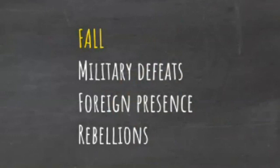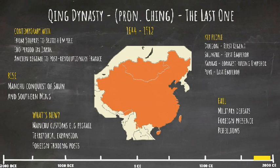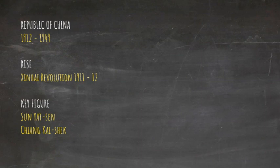The Republic of China lasted until 1949, its key figures being Sun Yat-sen and Chiang Kai-shek. The Chinese civil war started in 1927 and lasted until the Communist Party were victorious in 1949, sealing the final transfer of power in Chinese history, with Mao Zedong the first leader of the People's Republic of China.